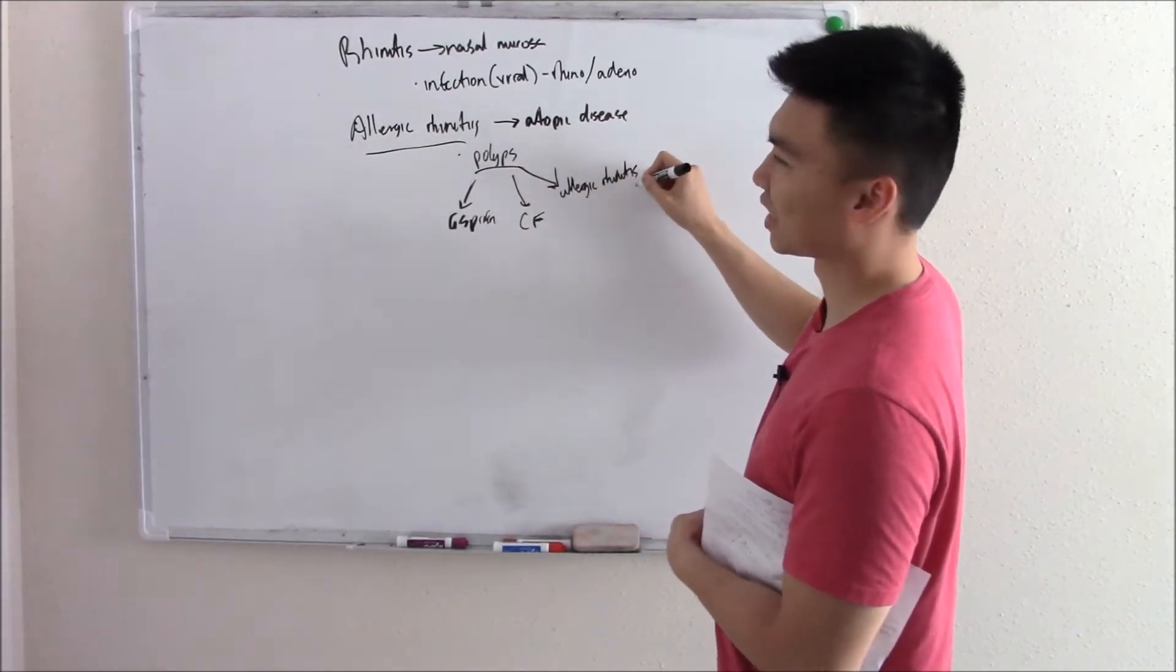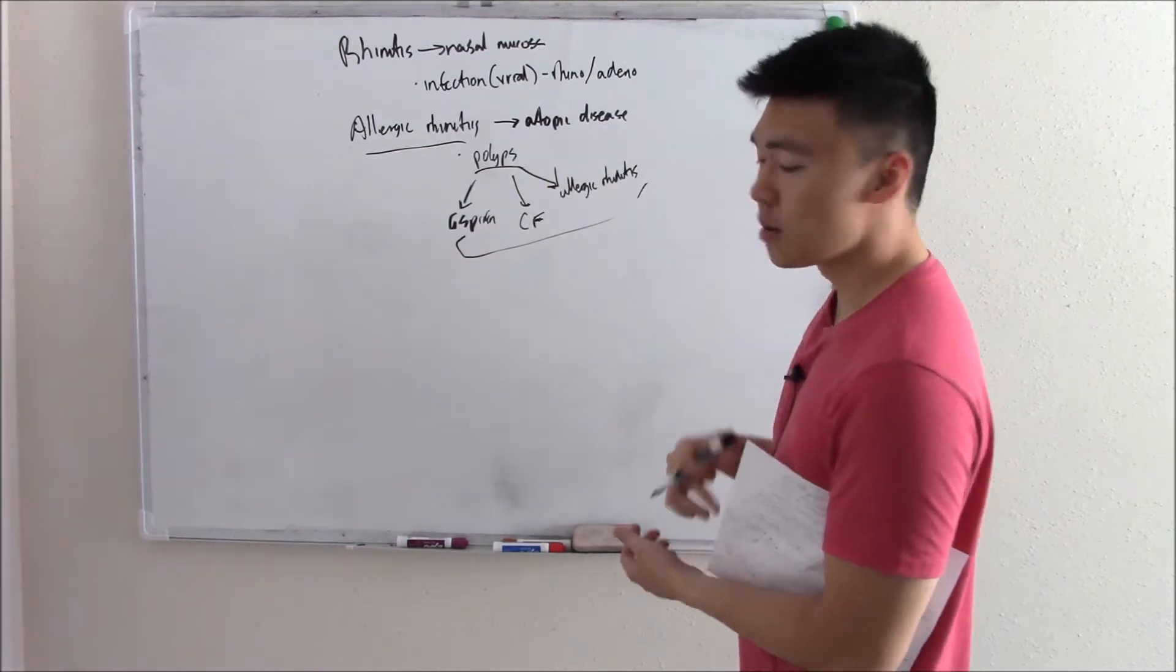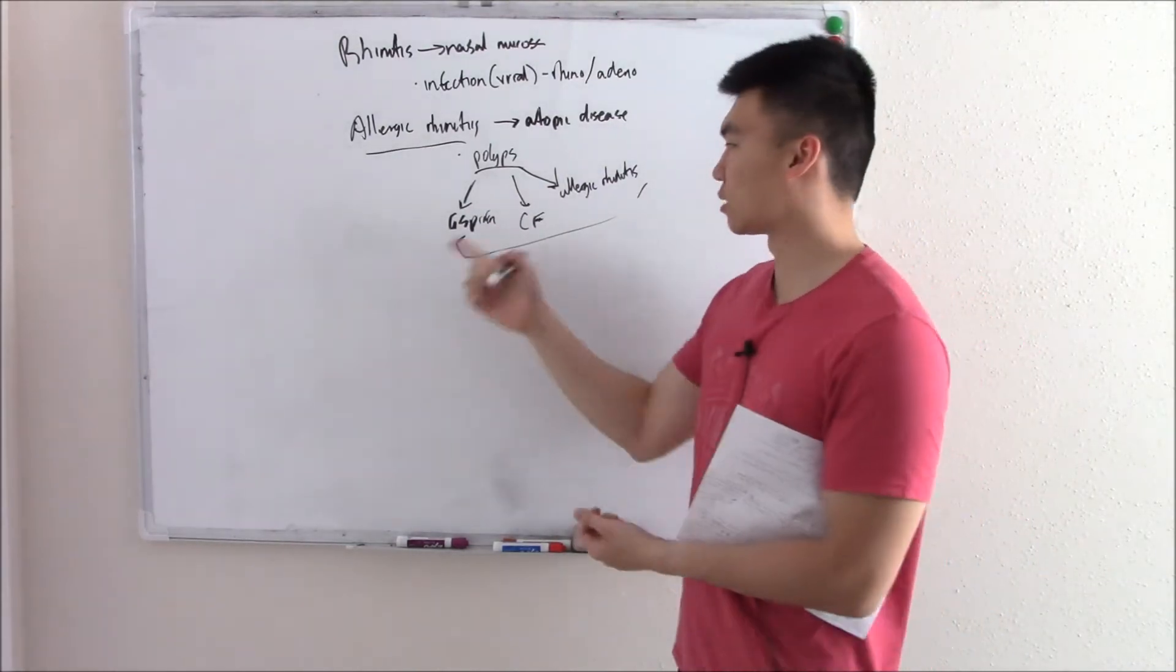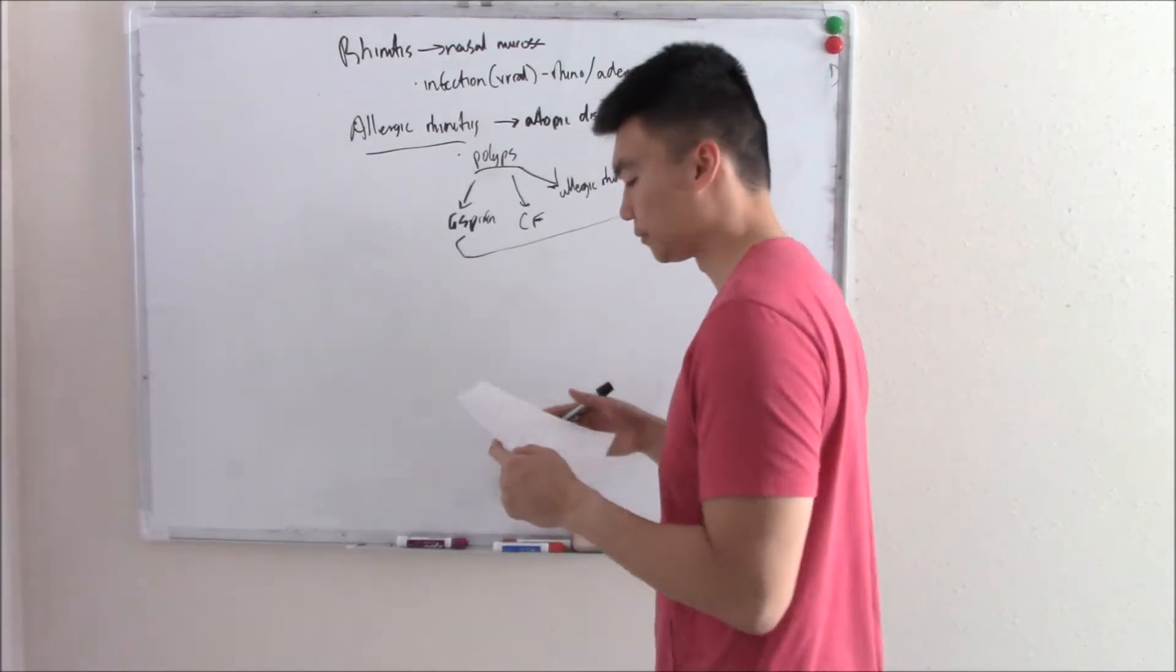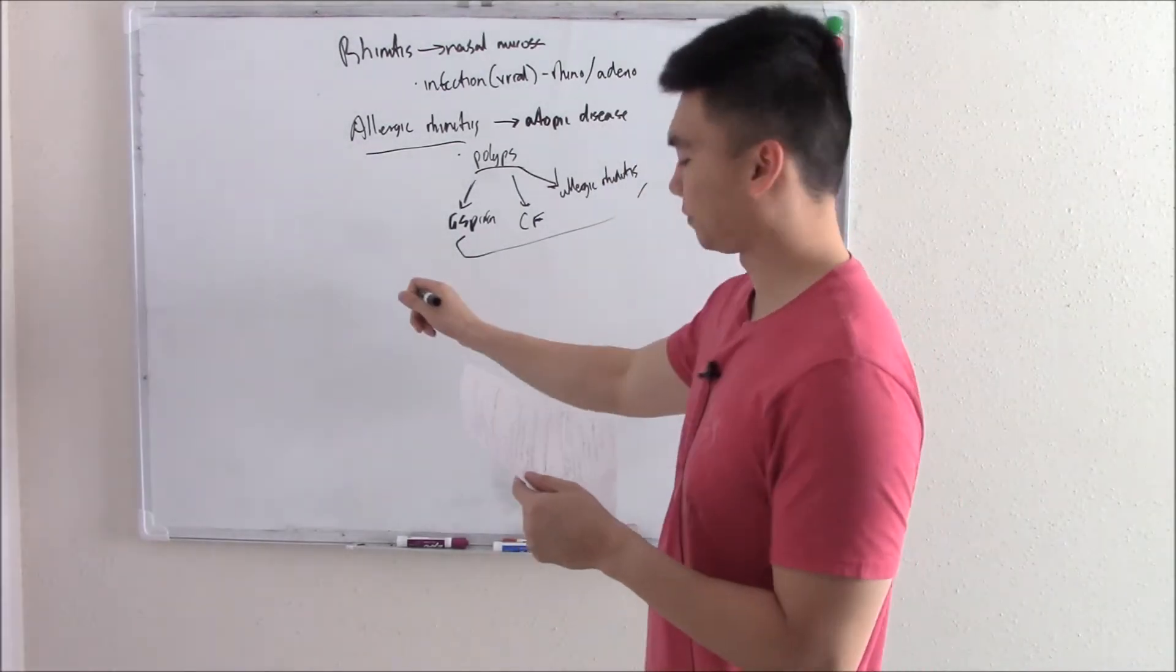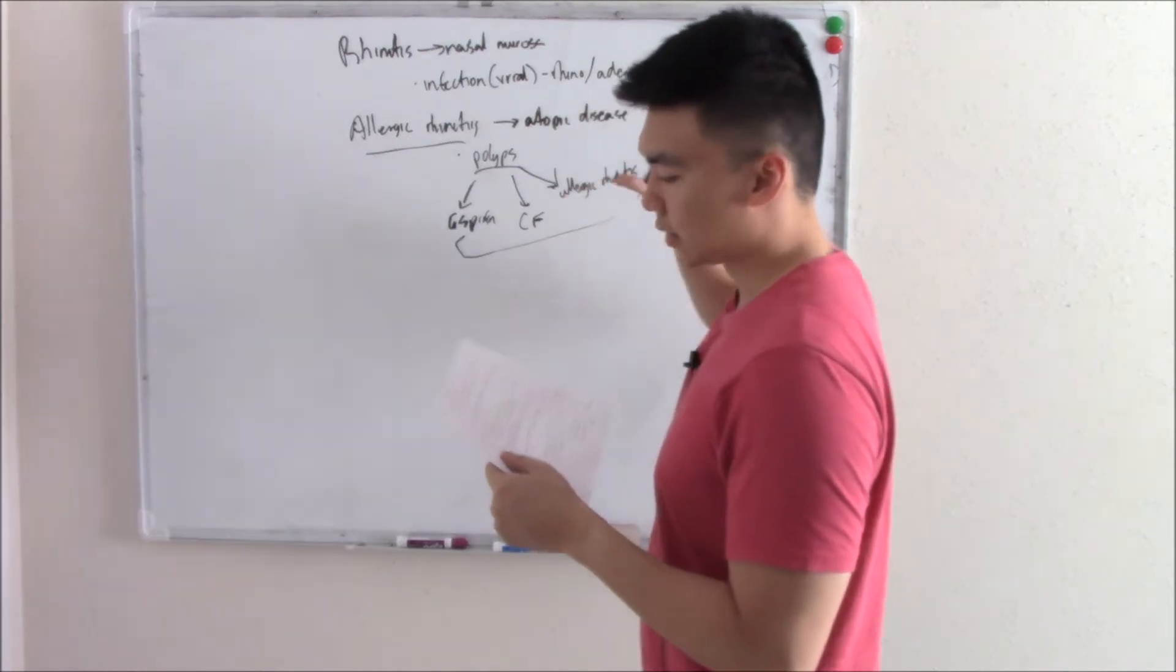So we can add one more to the list and that would be allergic rhinitis. I promise we won't add any more. These are the only three you really need to know. But any type of chronic inflammation can cause this and that's why you get polyps from all these disorders. They all cause chronic inflammation.